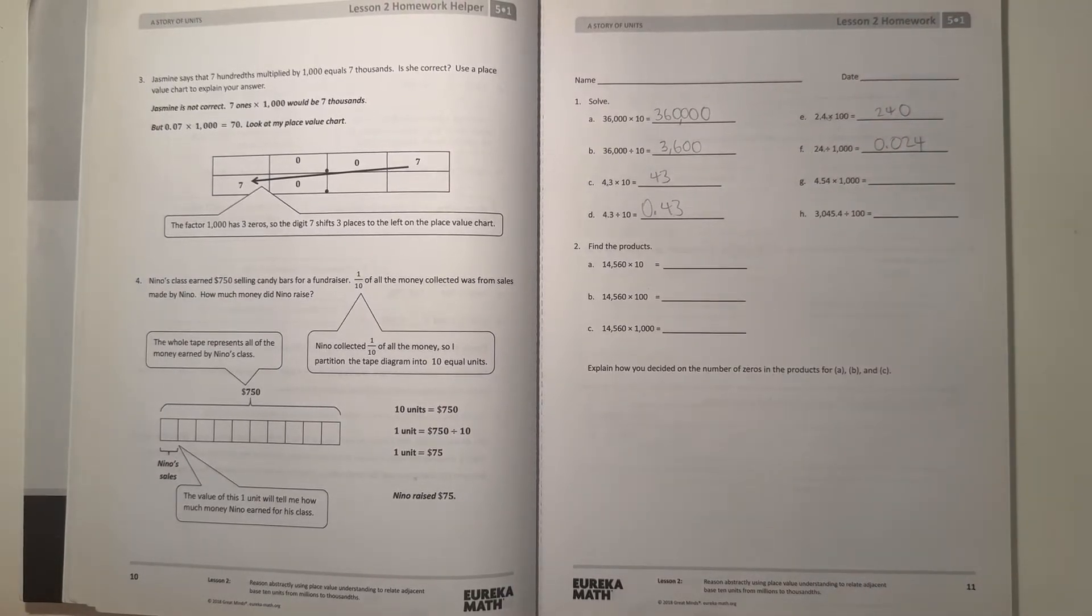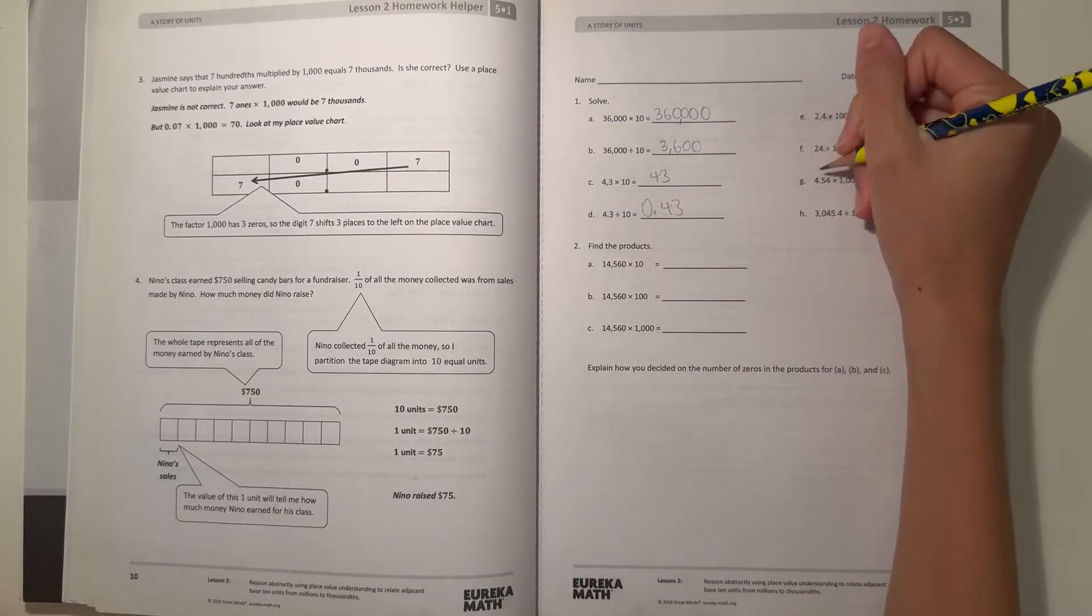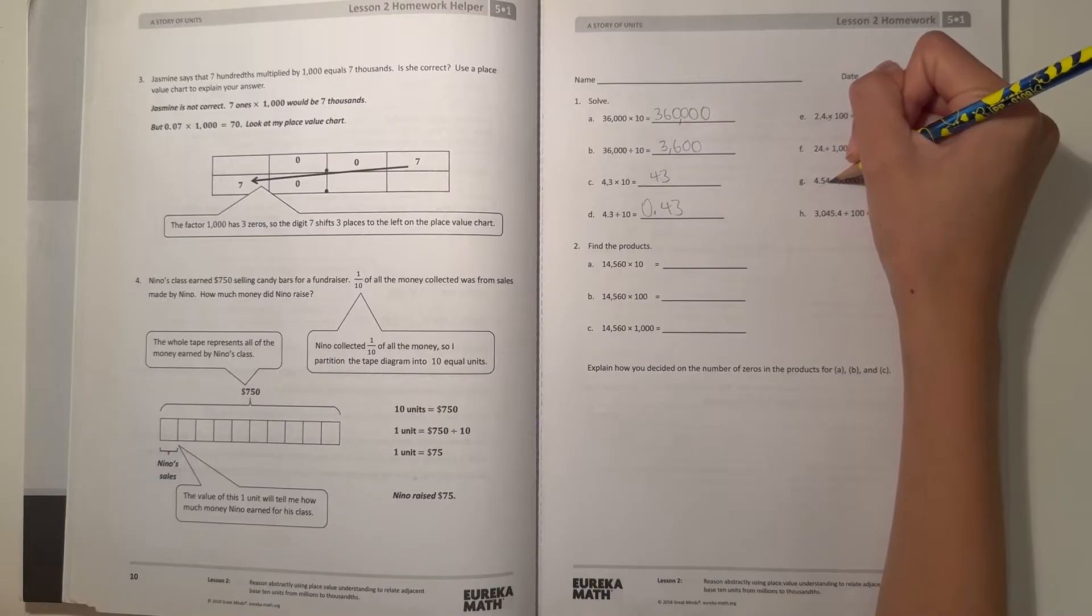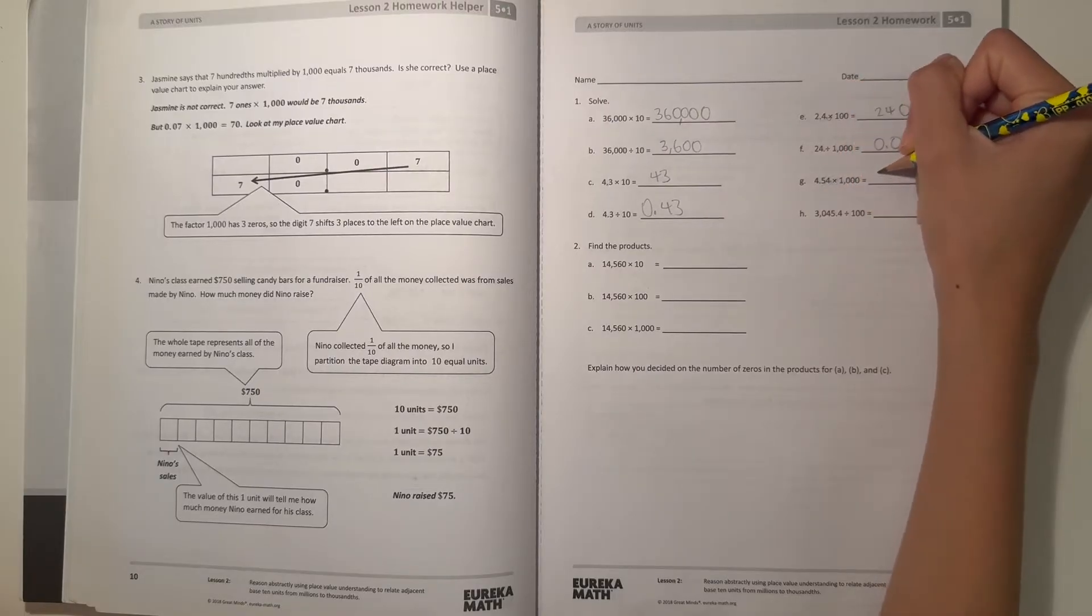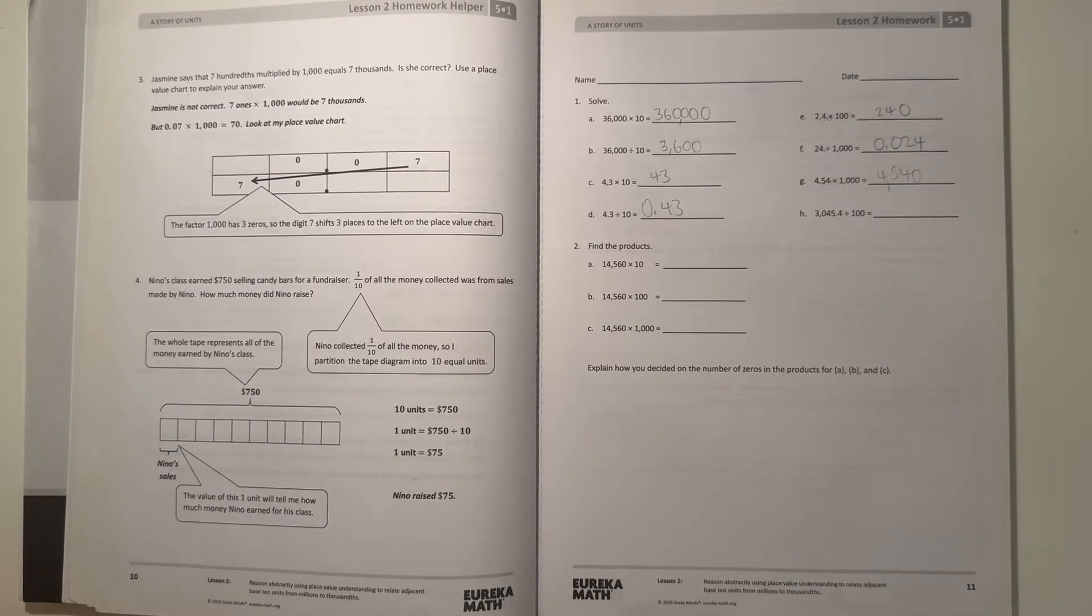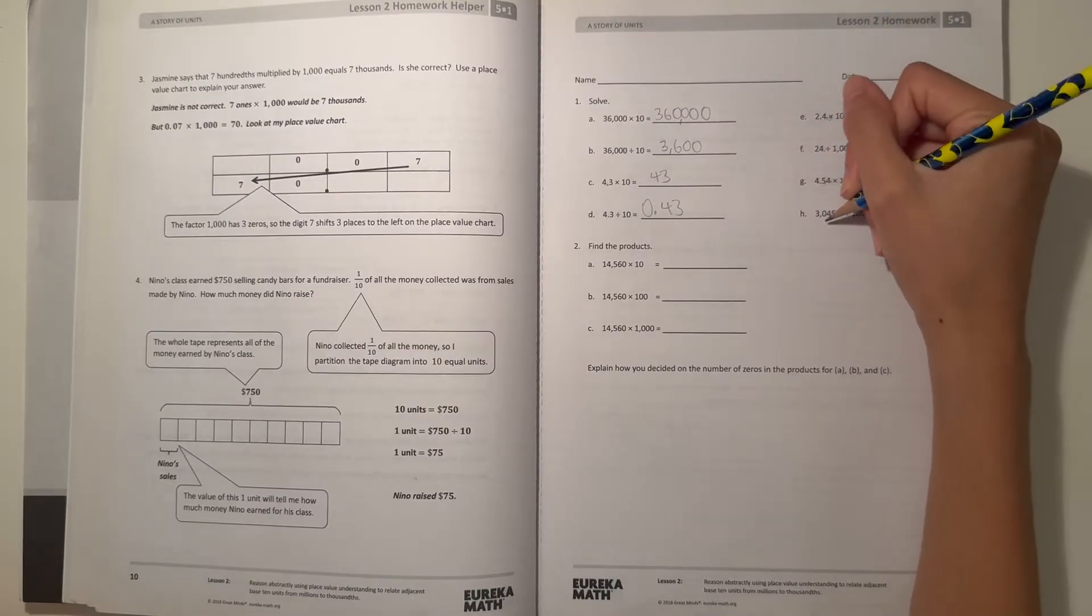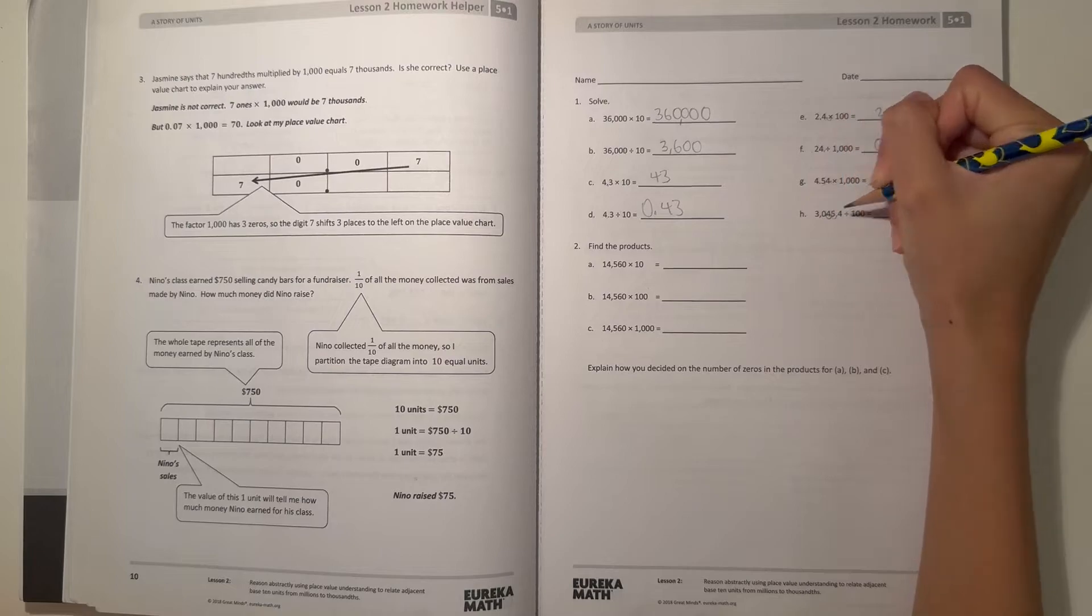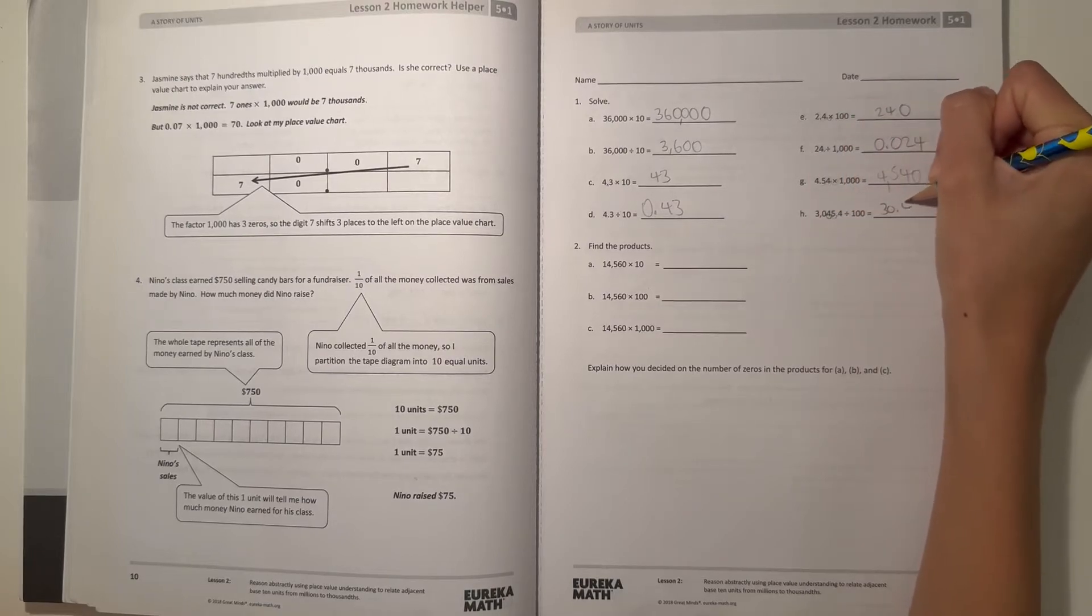And G, 4.54 times 1,000. So let's move our decimal point three places to the right. So 1, 2, 3, so that would be 4,540. And H, 3,045.4 divided by 100. So our decimal point would go 1, 2, so we have 30.454.